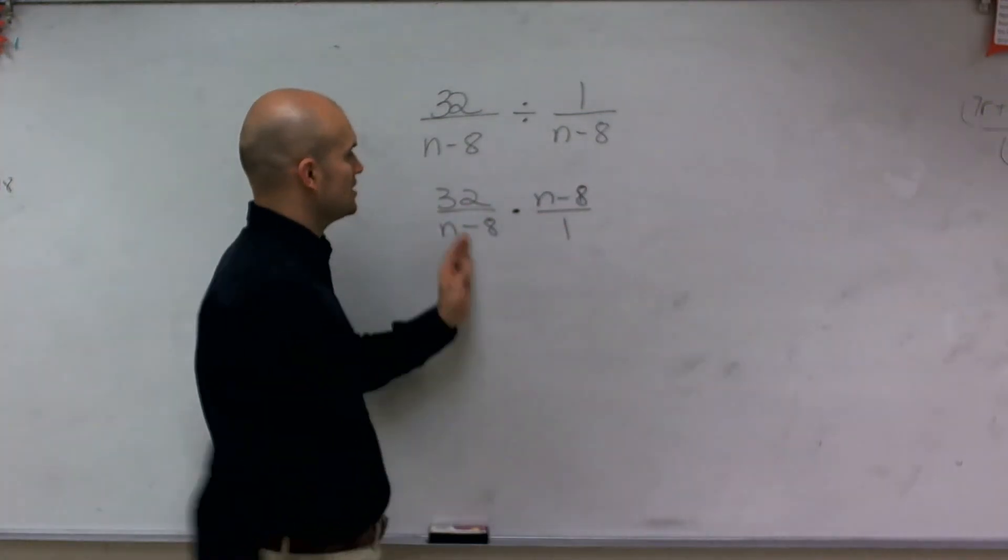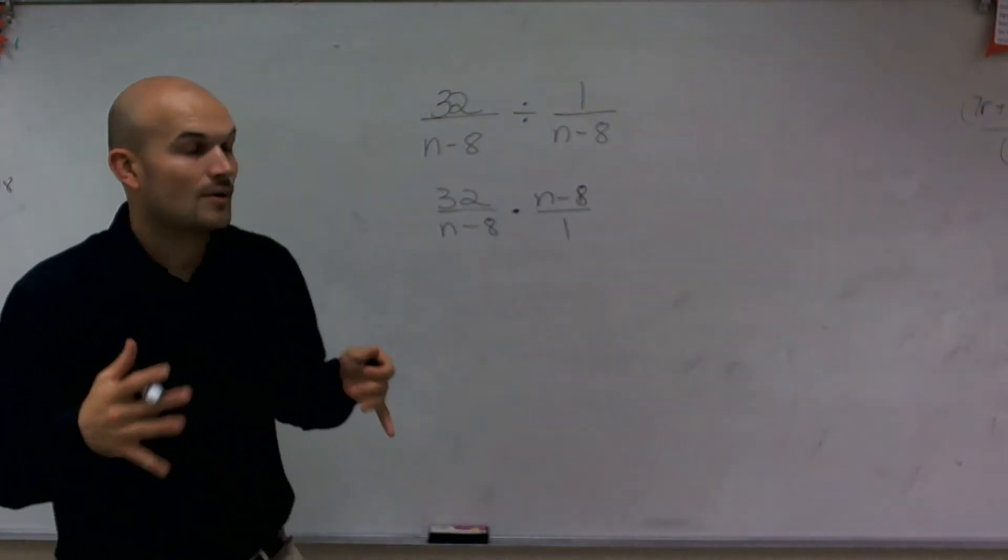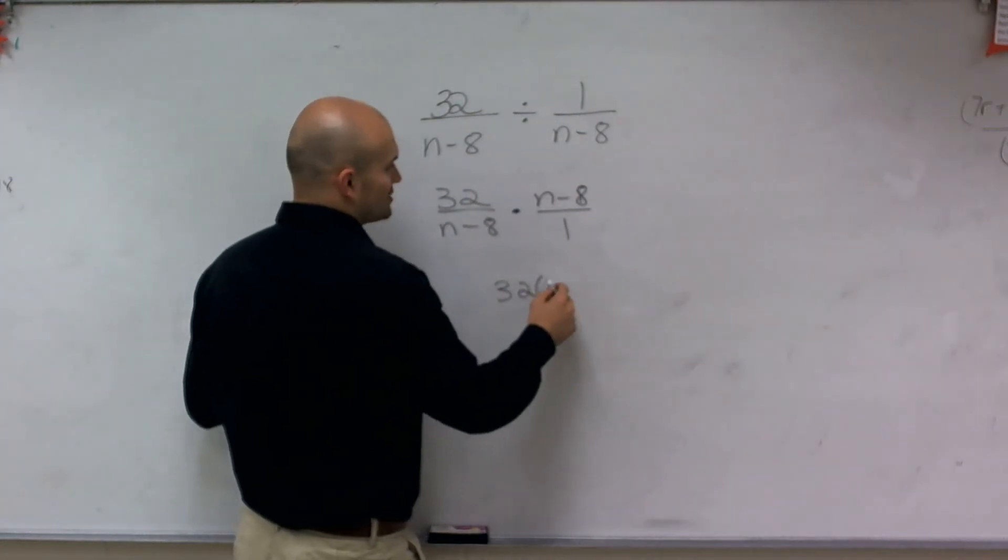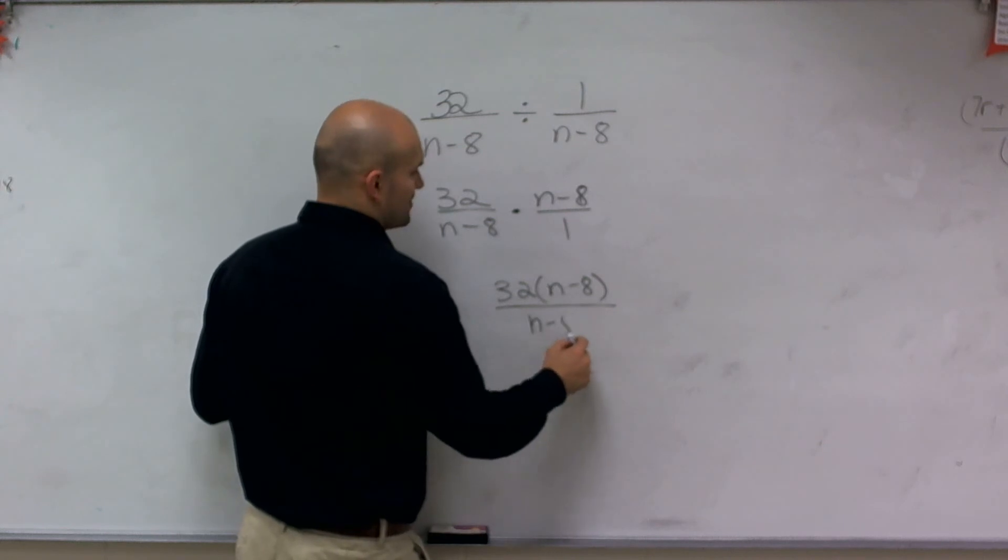Now remember, when you multiply across, you multiply the numerator times the numerator and the denominator times the denominator. However, I'm not going to use my distributive property here. I'm just going to leave this as 32 times (n minus 8) all over (n minus 8) times 1, because...